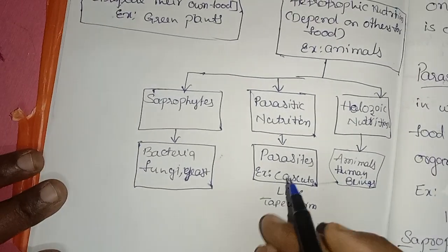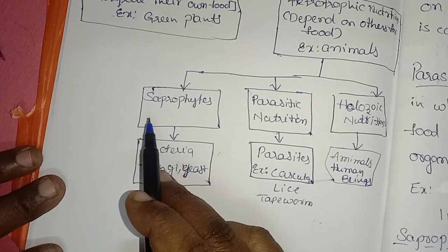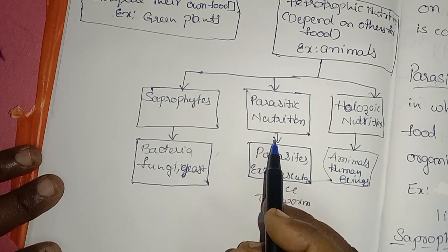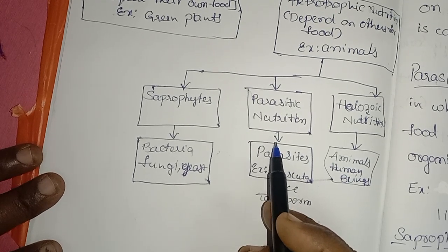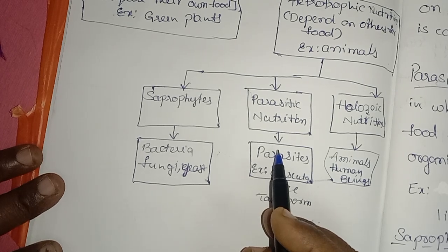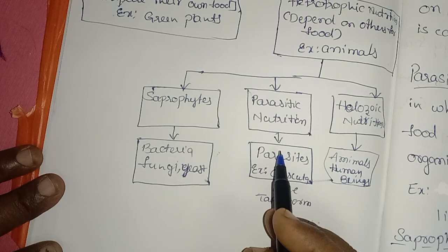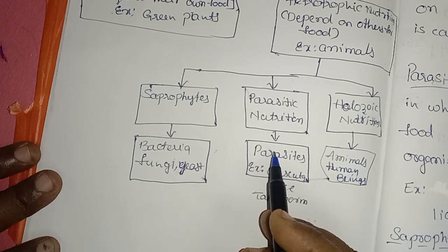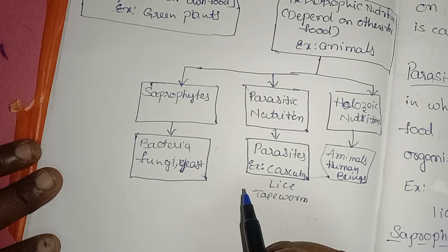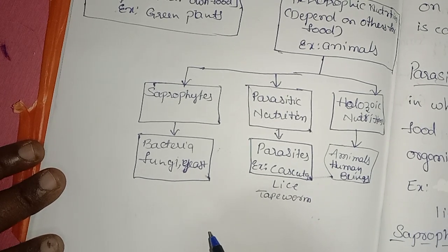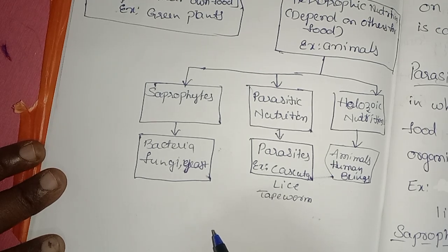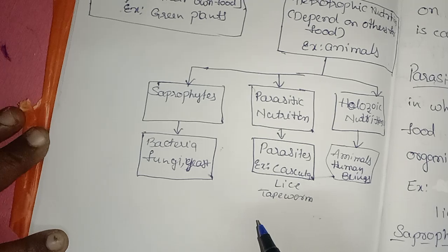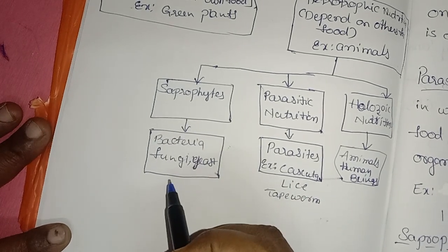In heterotrophic nutrition, we have three different types: parasitic nutrition, holozoic nutrition, and saprophytic nutrition. Parasitic nutrition is a type in which an organism derives its food from the body of another living organism without killing it. Examples include tapeworms, cuscuta plant, lice, leeches, roundworms, and ticks.